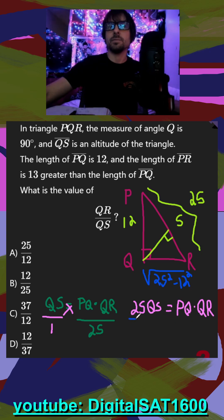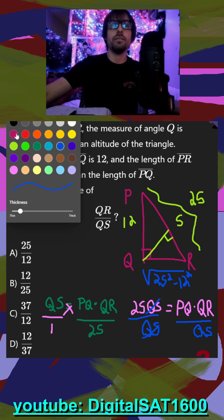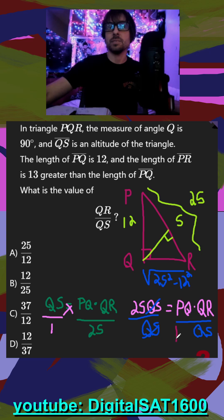So if I divide both sides by QS here, QS gets rid of that. And now I have QR over QS. I just have one final step. I want to divide both sides by PQ as well. PQ, that crosses off. And now I finally have it QR over QS, which is what we want, is equal to 25 over PQ.